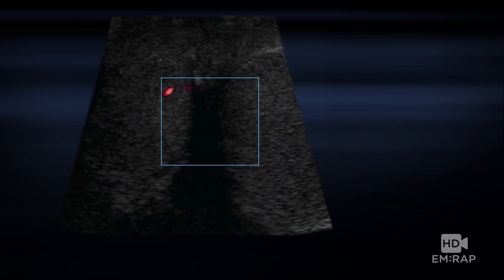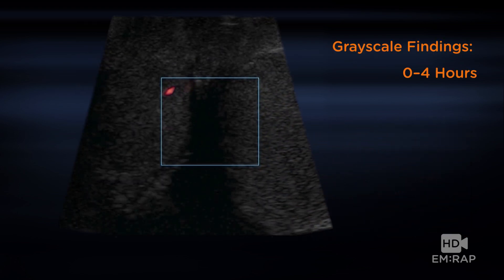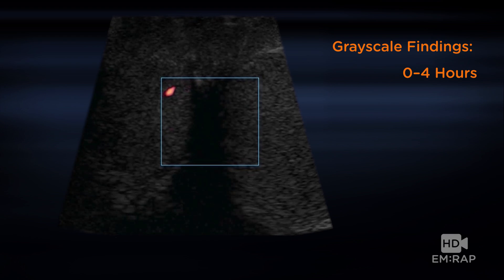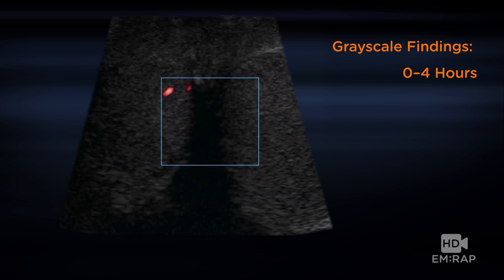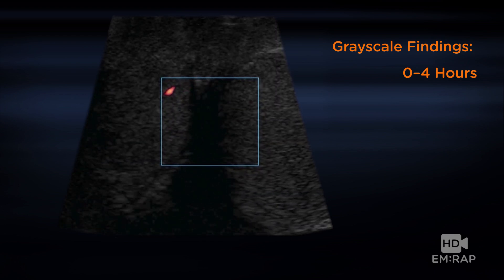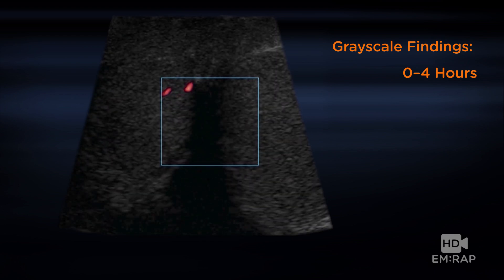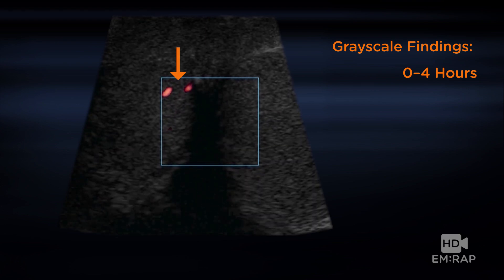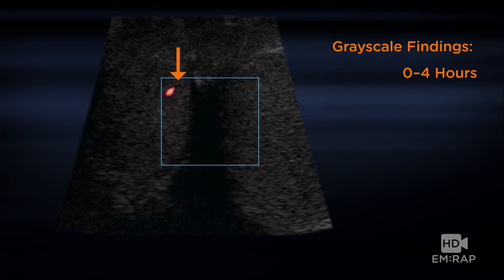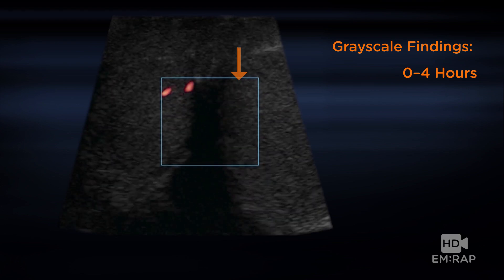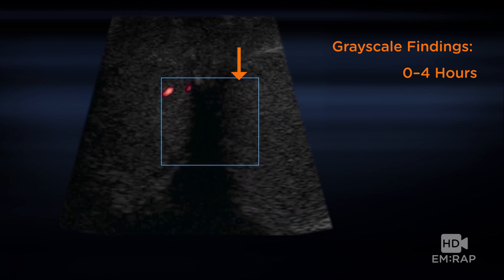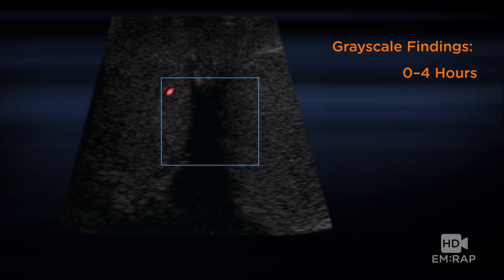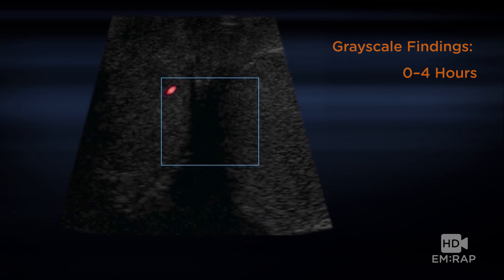Here we have a patient with testicular torsion of just a couple hours duration. If you look at the grayscale appearance, both testicles look similar, but here you see flow in the unaffected testicle and there's no flow in the torsed testicle. This is the one you want to act on quickly.